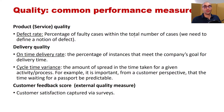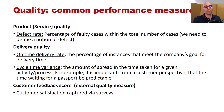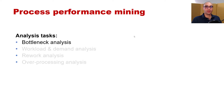To enhance quality, we can reduce the defect rate by training resources. The on-time delivery rate can be controlled through agreements with suppliers or delivery companies. Customer feedback is an external measure we cannot control directly, but we can improve it by enhancing our process quality. So performance mining includes bottleneck analysis, workload and demand analysis, rework analysis, and over-processing analysis. In the next video I'm going to cover the bottleneck analysis.